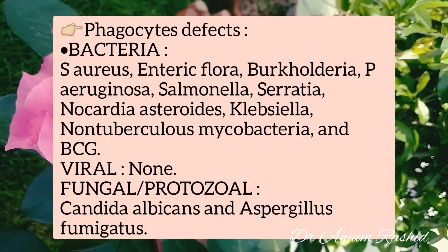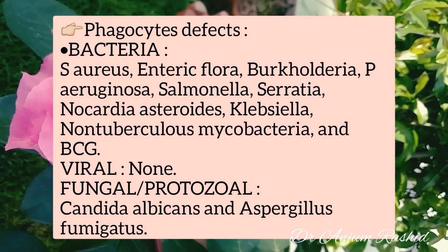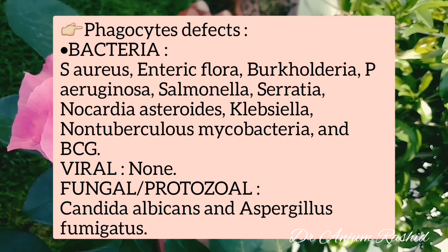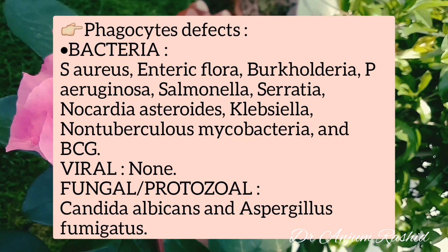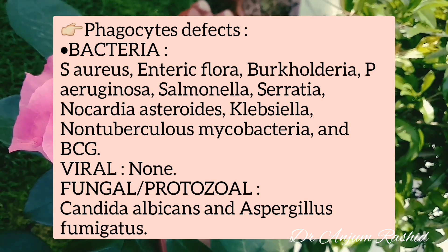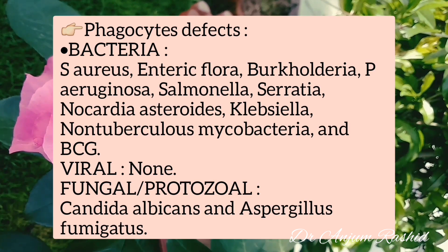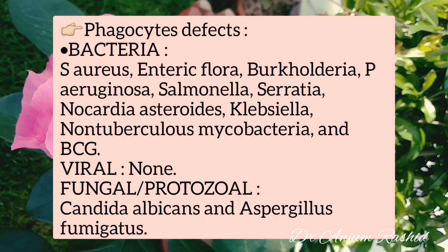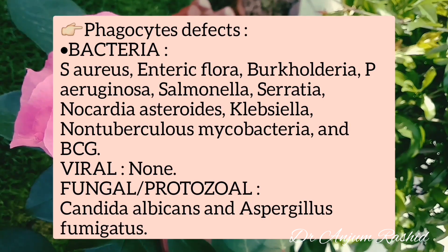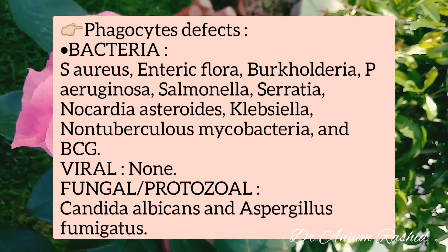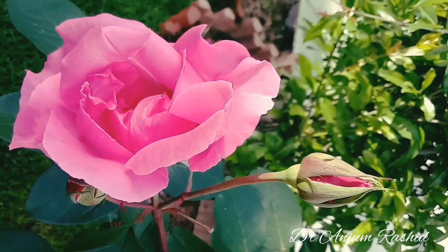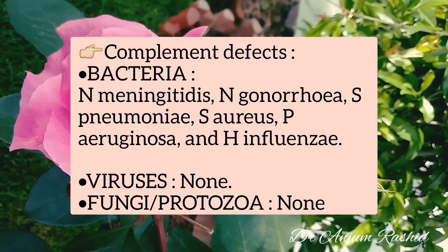In phagocytic defects, bacterial and fungal/protozoal infections are common, but viral infections are uncommon. Bacterial infections include Staphylococcus aureus, enteric flora, Burkholderia, Pseudomonas aeruginosa, Salmonella, Serratia, Nocardia, Klebsiella, nontuberculous Mycobacteria, and BCG. Fungal and protozoal infections include Candida albicans and Aspergillus fumigatus.